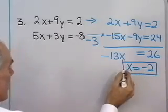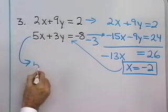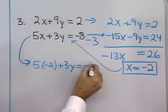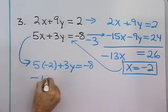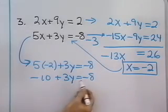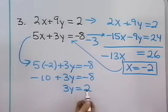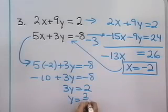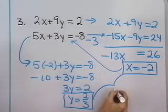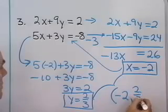That's the x-coordinate of my point of intersection. Substituting back in: 5 times negative 2 plus 3y is equal to negative 8. Negative 10 plus 3y is equal to negative 8. Add 10 to both sides: 3y is equal to 2. Divide both sides by 3, and y is equal to 2 thirds. That's the y-coordinate of the point of intersection. The solution is x equal to negative 2, y equal to 2 thirds.